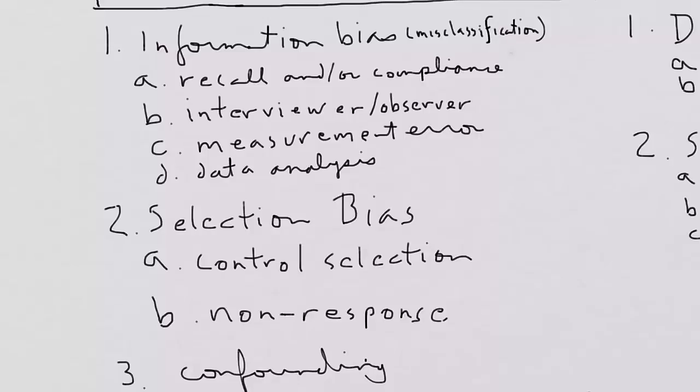So each of these can be assessed as either present or absent, or can be assessed in a matter of degrees. Recall bias has to do with surveys or other means of collecting data in which people are asked to remember what they ate or what they did many years or many months ago. Compliance has to do with experiments or other cohort studies in which people are asked to keep track of food that they eat in a prospective nature.